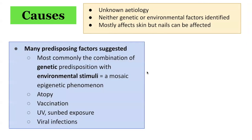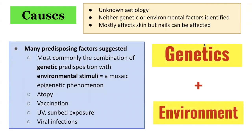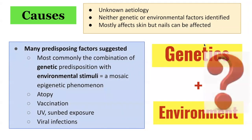Some other predisposing factors associated with lichen striatus include vaccination, UV and light exposure, as well as viral infections. At this stage, the exact cause of lichen striatus is yet to be discovered.